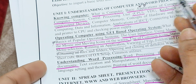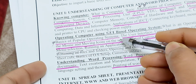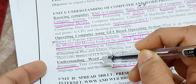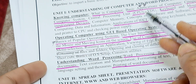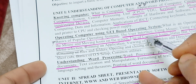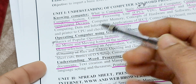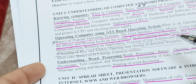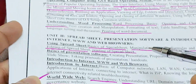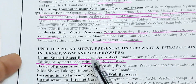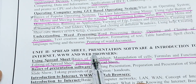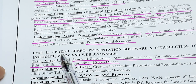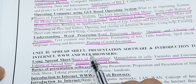Learn the first two topics first, then go to basics of popular operating system. If you learn those two, you can cover everything in Unit 1. Try to understand first, then learn — understand first, then learn. Now moving on to the second unit.